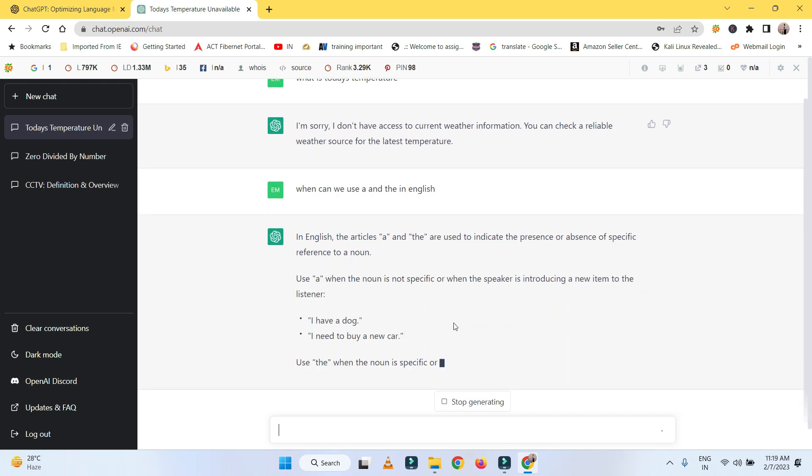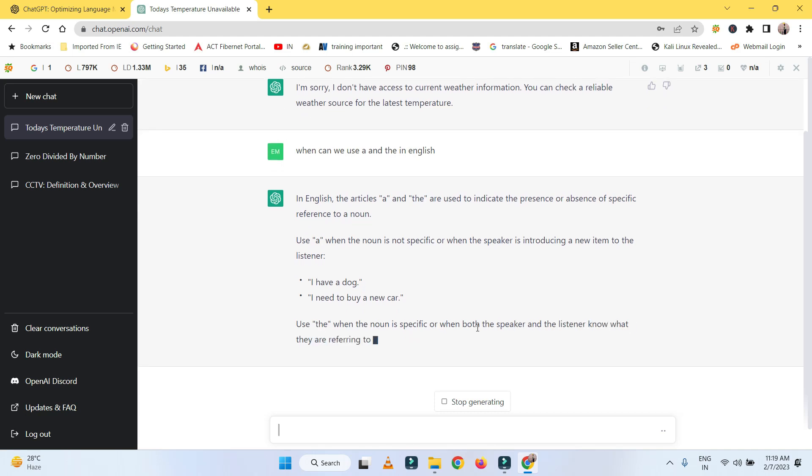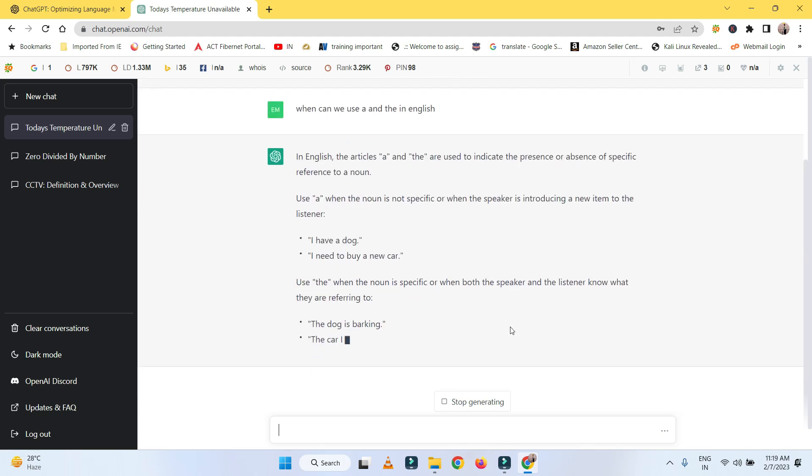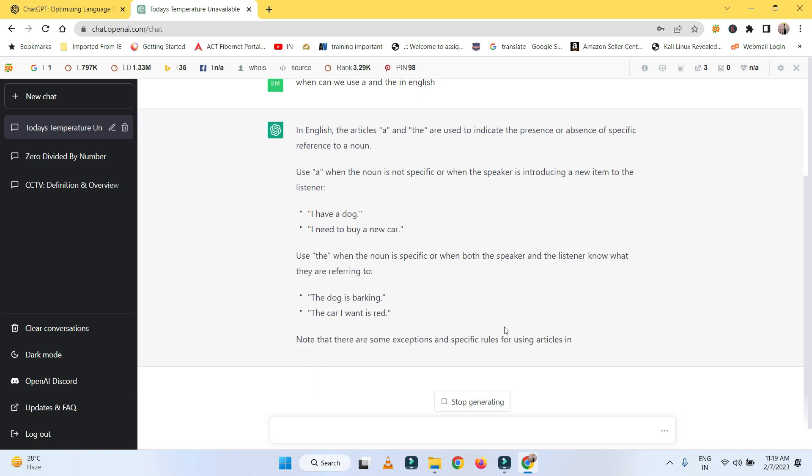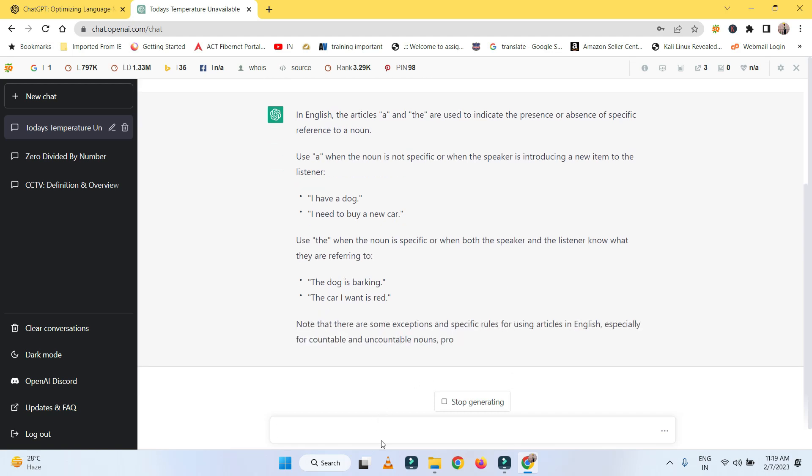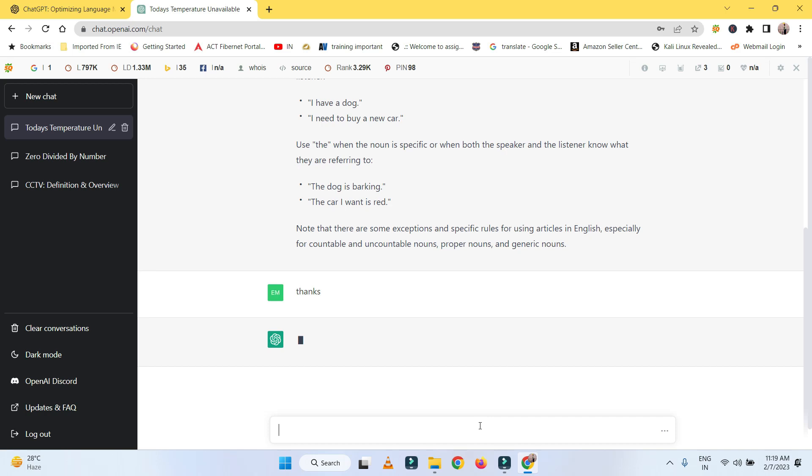This is how OpenAI has designed the chatbot or ChatGPT. This is how it gives details. You might see on the screen it will give all the uses of A and THE—each and everything. It's in trial, so if there are any bugs or something, it will give you all the details there.